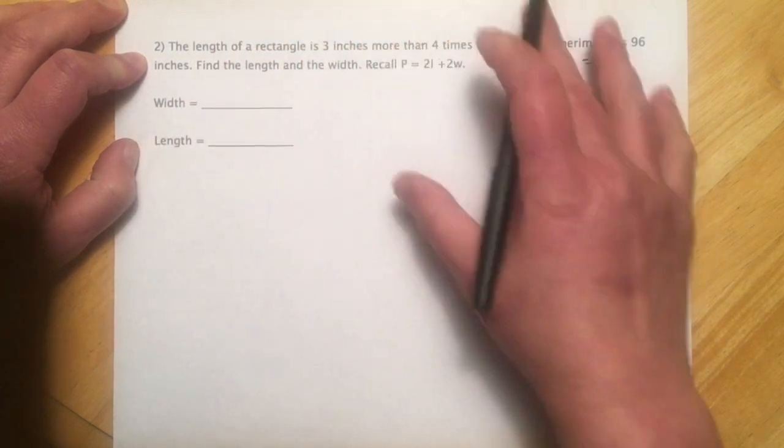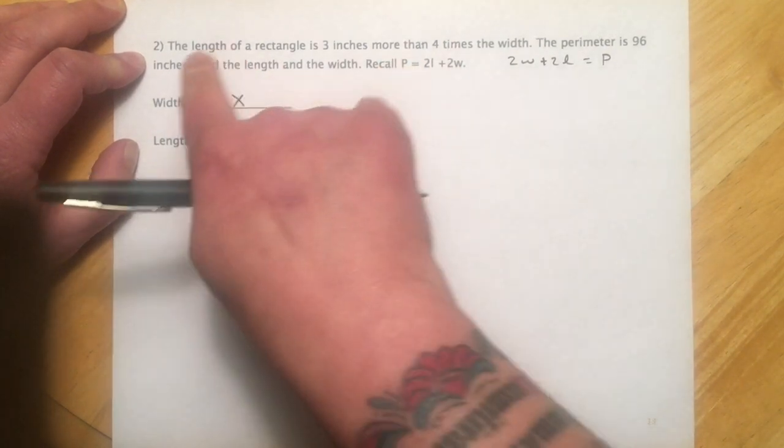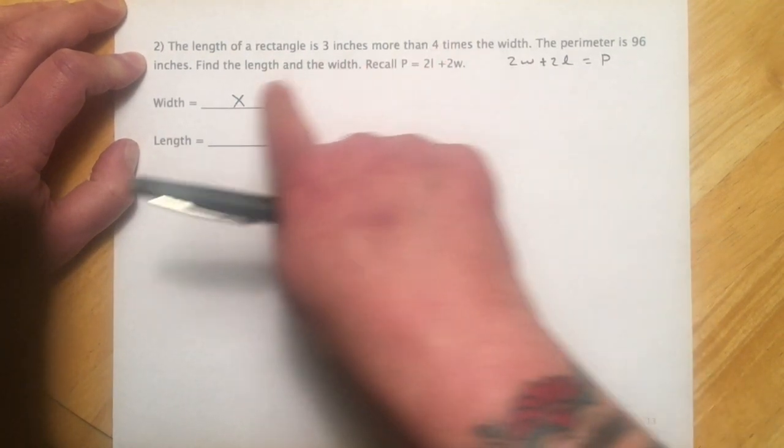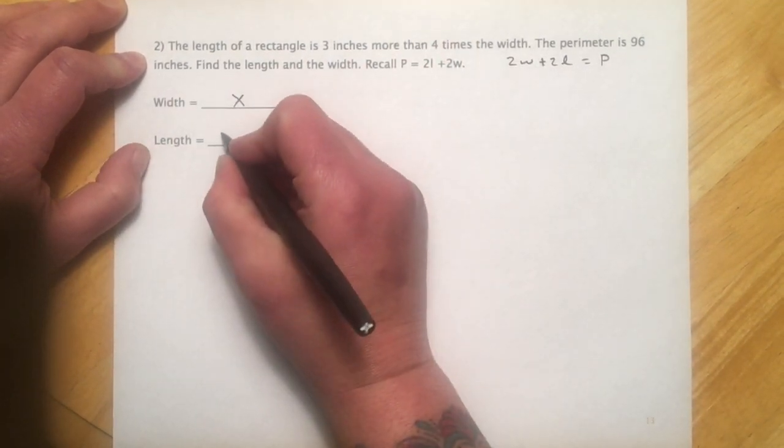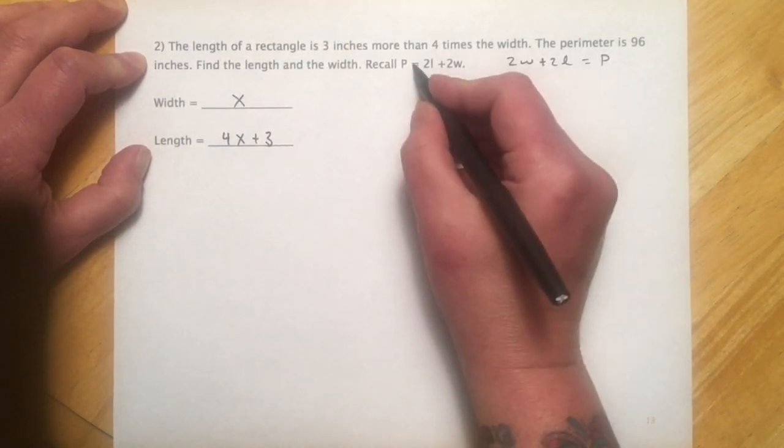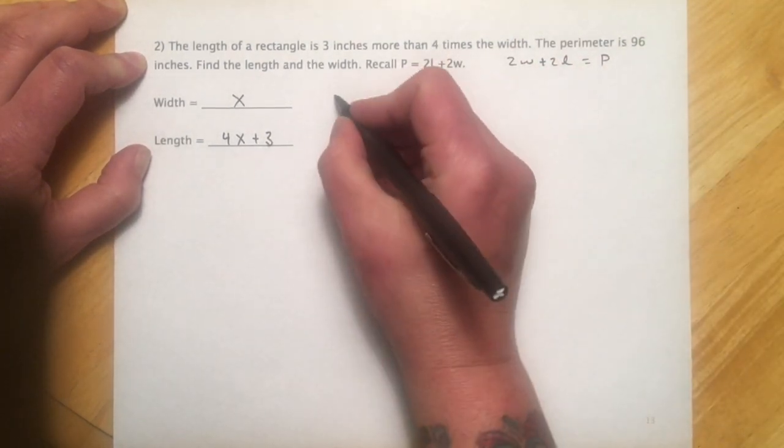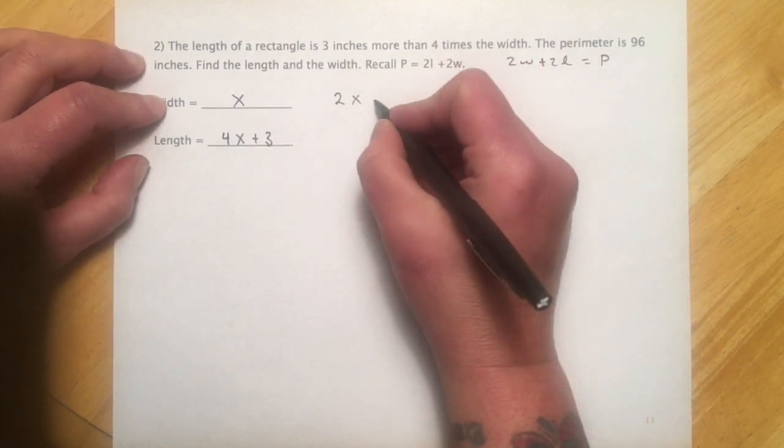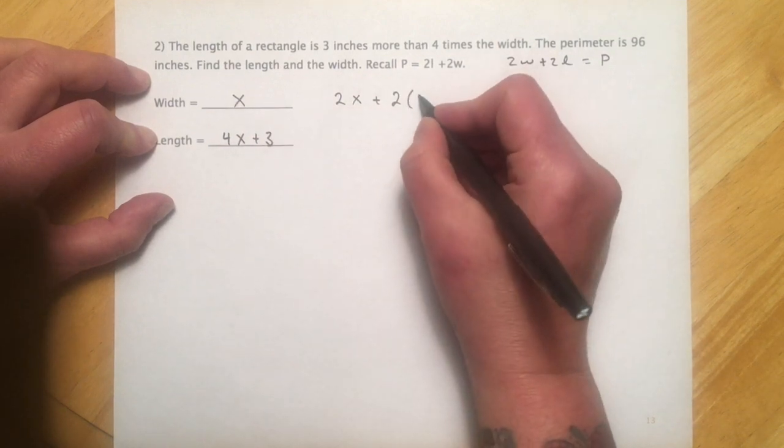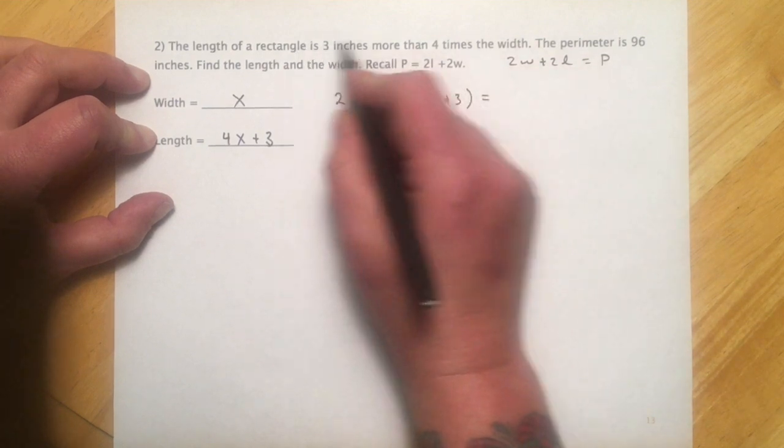The length of a rectangle is three inches more than four times the width. So we want the width to be the plain variable. We've got three inches more, so we have to add three inches to four times this amount. So the length is going to be 4x plus three inches more. And then we're just substituting into this. So 2 times the width, which is x, plus 2 times the length. And this whole expression is the length. So 4x plus 3 equals P, that was 96.